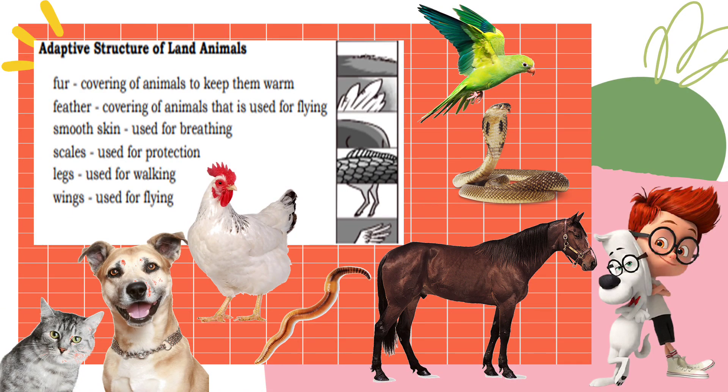On the other hand, animals have also structures that help them adapt on land — they are called terrestrial animals. Some animals like dogs, cats, and monkeys are covered with fur to keep them warm. Others, like birds, are covered with feathers which give them the ability to fly. Some, like worms, have smooth skin for breathing. In general, most animals have body coverings for protection.